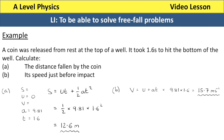We then work out the speed just before impact. There is a very common misconception amongst A-level students: they believe that the speed of an object when it hits the ground is 0, but it isn't. When an object hits the ground it is travelling at a very fast speed, and then the ground puts a force on it to decelerate it to 0. We use V equals U plus AT, doing 9.81 times 1.6, to give us a speed of impact of 15.7 metres per second.